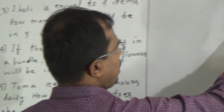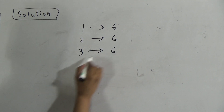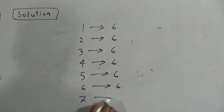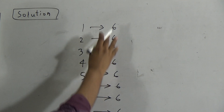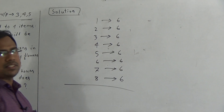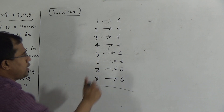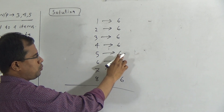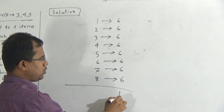In bundle number one there are six flowers. Bundle number two, again six flowers. Three, six flowers. Four, also six flowers. Five, six flowers. Six, six flowers. Seven, also six flowers. And in eight, six flowers. Total eight bundles, each with six flowers. If we add these eight sixes: 6+6=12, 12+6=18, 18+6=24, 24+6=30, 30+6=36, 36+6=42, and 42+6=48.